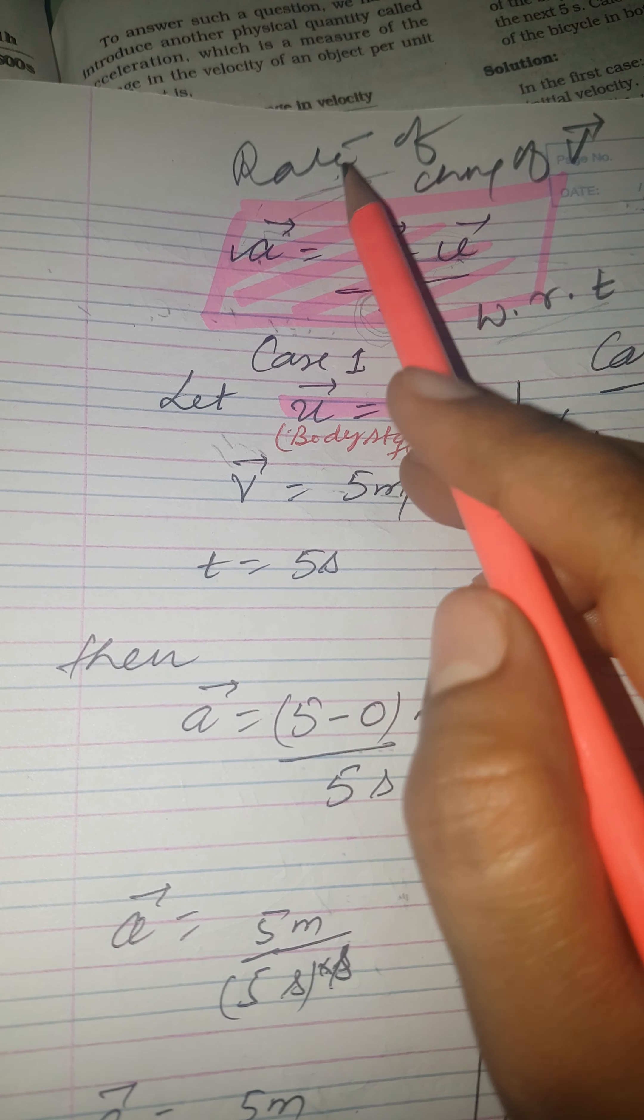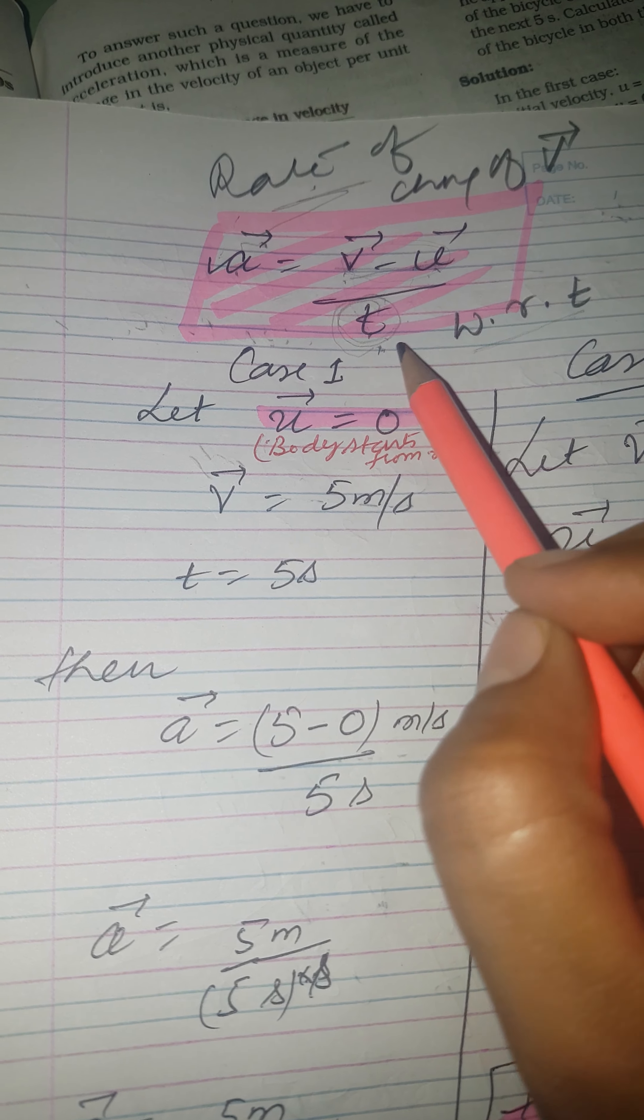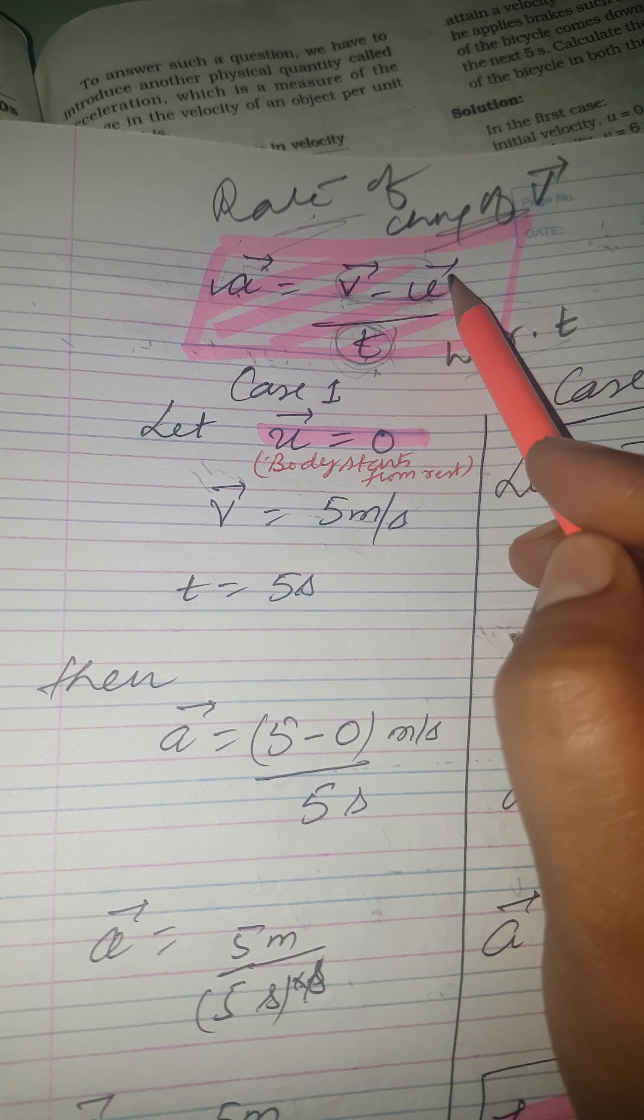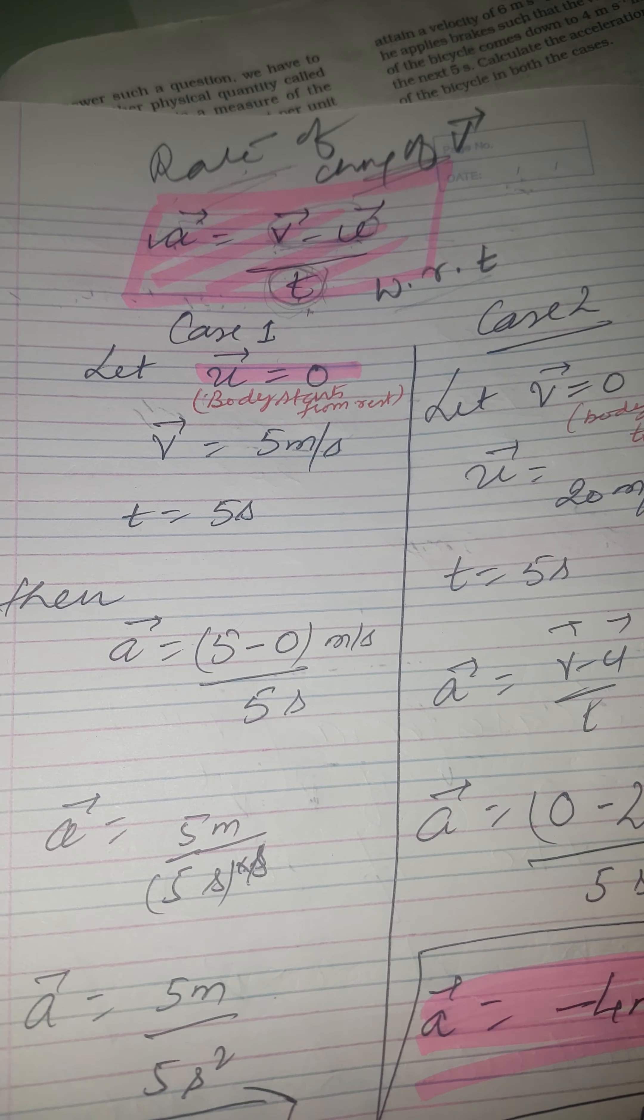Or you can also define as acceleration is defined as rate of change of velocity. So to understand this more, we are going to discuss two, three examples - case one, case two, and case three.